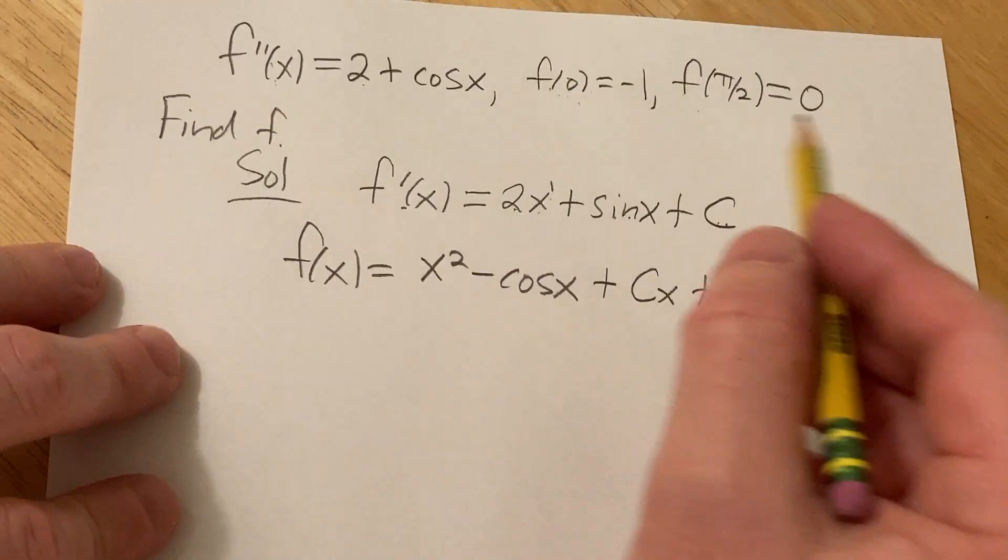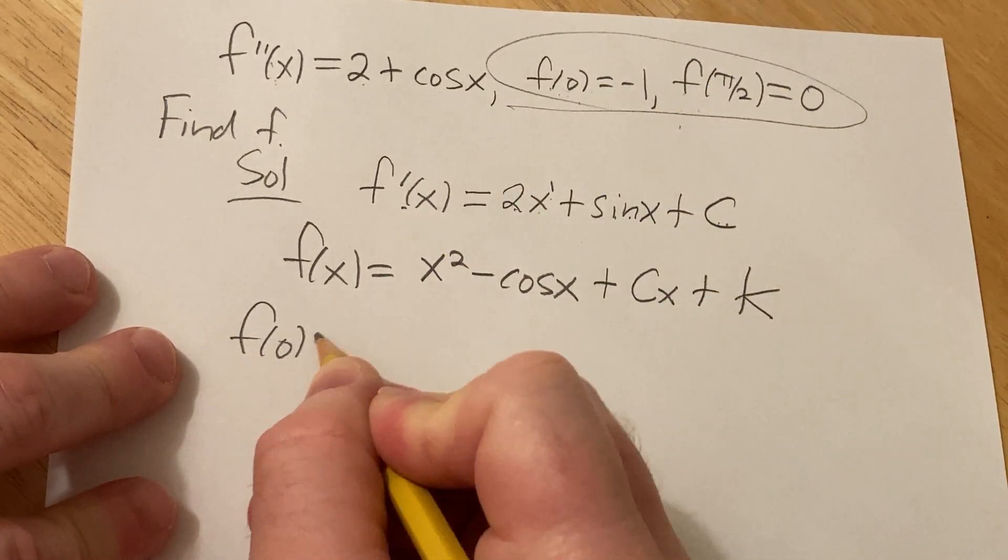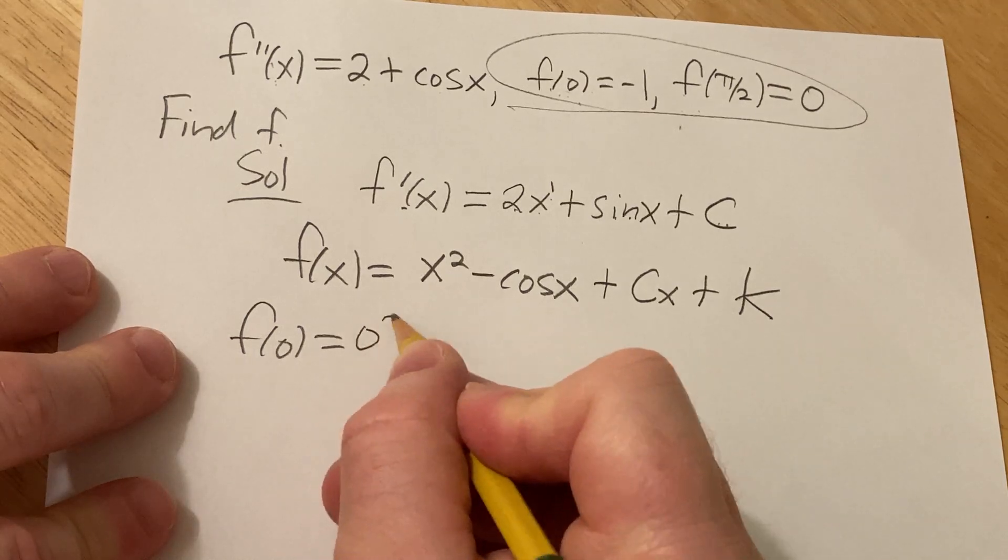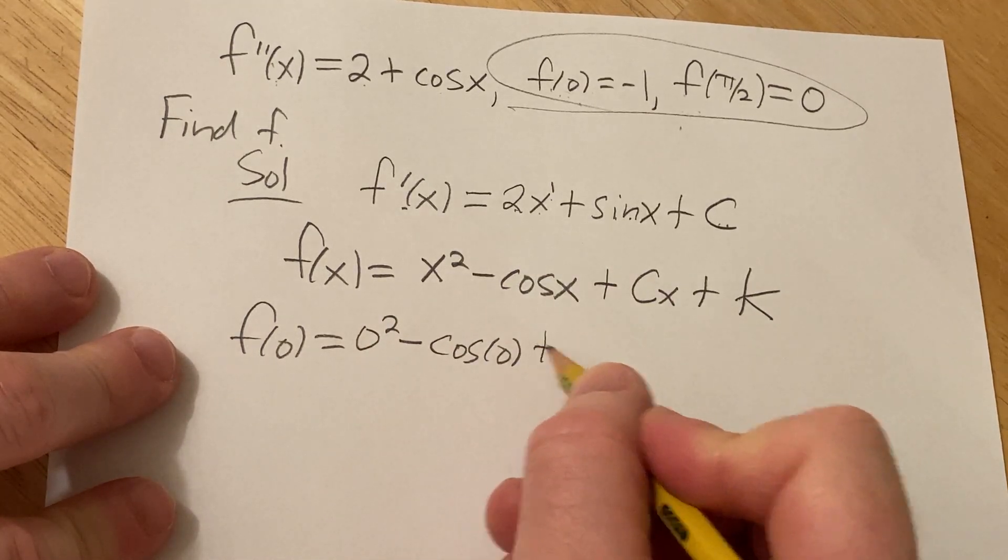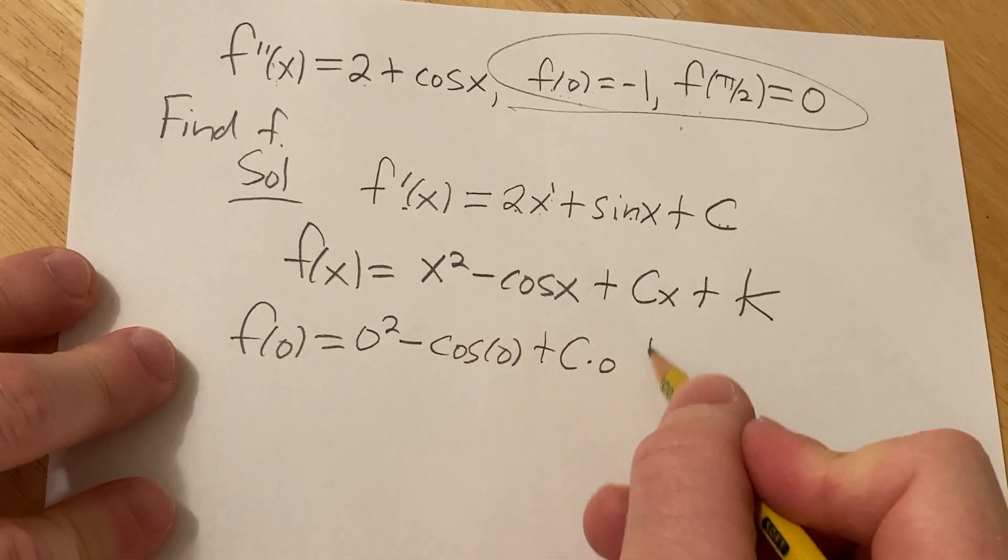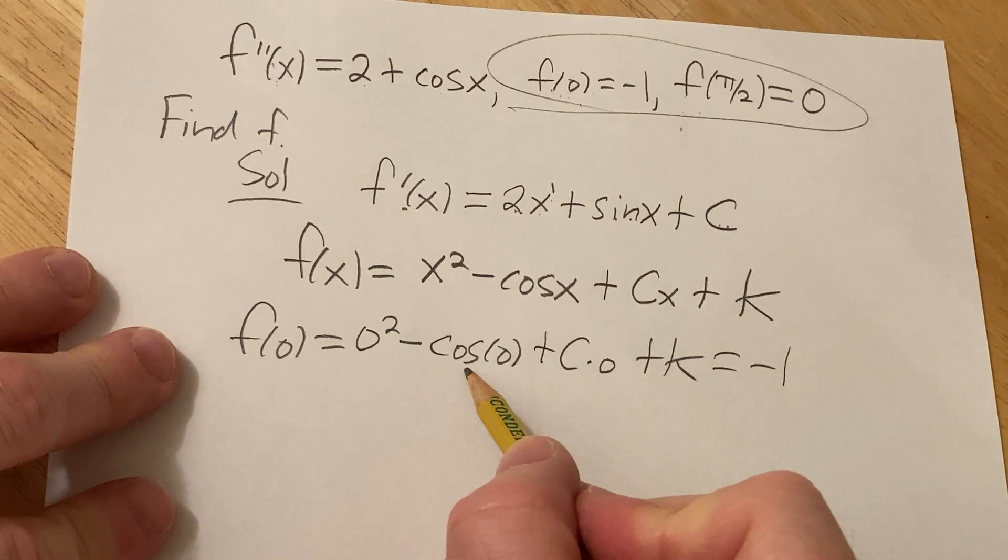Alright, so this is our function. So, now we just have to use these conditions. Let's use the first one here. f of 0. It's going to be 0 squared minus cosine of 0, plus c times 0, plus k. And that's equal to negative 1.